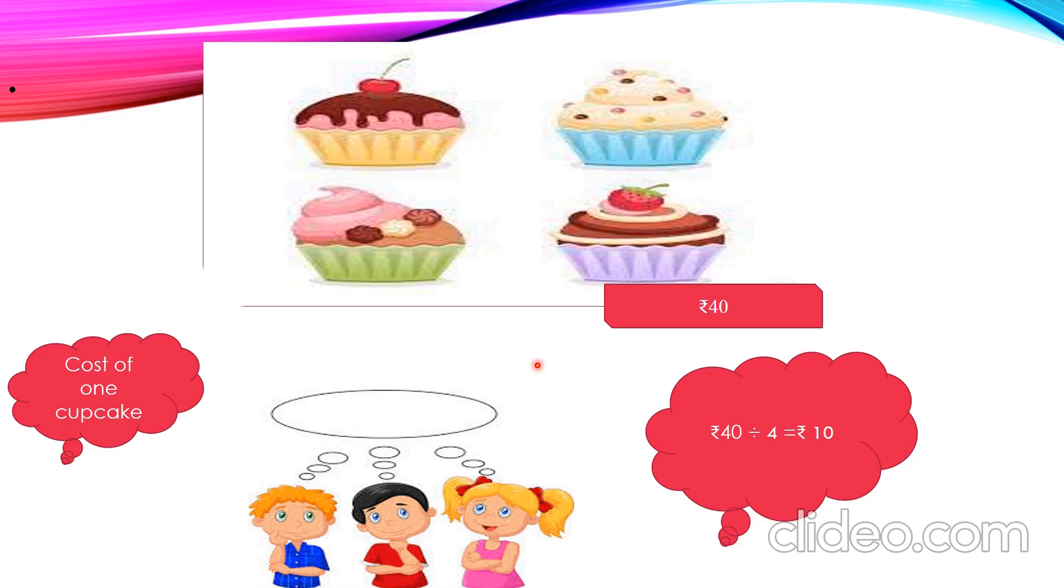Yes, we can apply the concept of division here. That means, total cost divided by how many cupcakes are here? 4. If we divide that by 4, we will get the cost of each cupcake. That is, 40 divided by 4 equal to 10. If we know the cost of many items, to find out the cost of each, we are supposed to apply the concept of division.